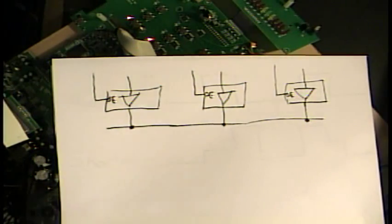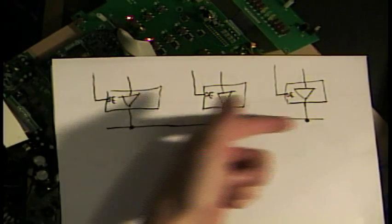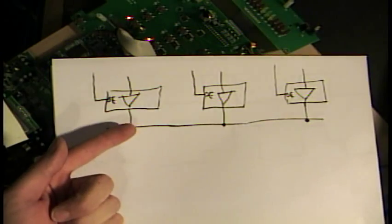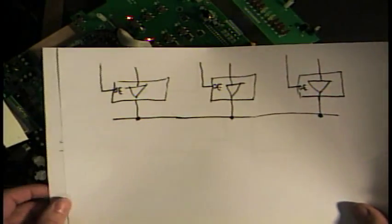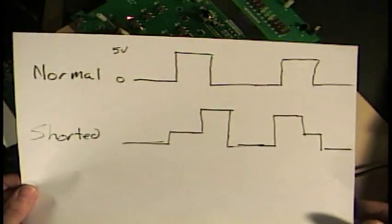What I found was a lot of bus contention, or what's called bus contention, and that's where you have multiple chips that are driving on the same shared wire. And if you hook the wire that has bus contention up to an oscilloscope, you'll see a pattern like this.